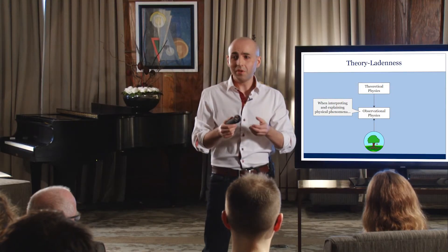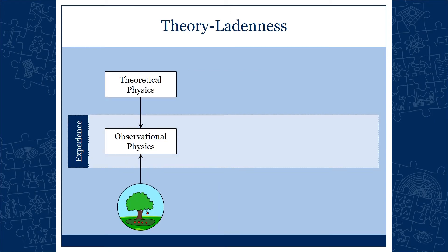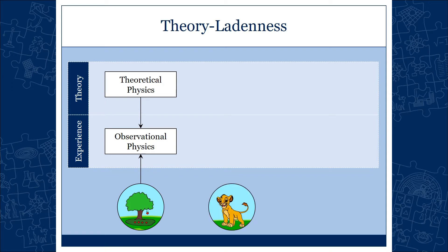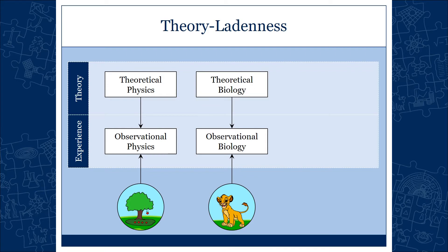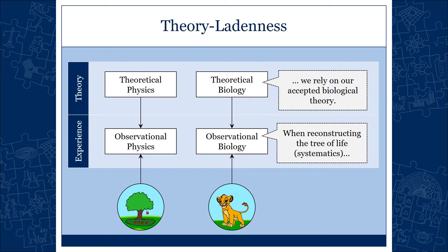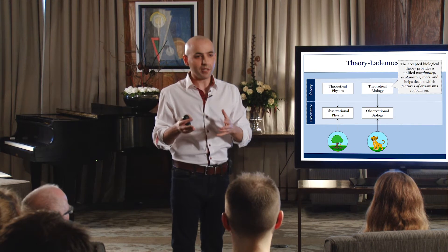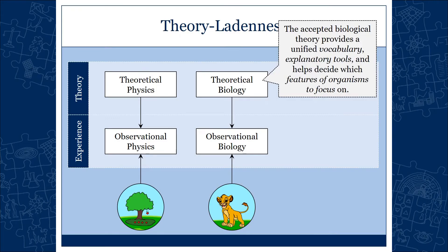So if your task is to study falling apples, you'll focus on mass and ignore the color or the brand of the apple. This is true for every combination of observational and theoretical science. For biological phenomena, it's exactly the same — when we reconstruct the tree of life, we rely on accepted biological theory, which gives us our universal vocabulary, taxonomy, explanatory tools, and helps us understand which features of organisms to focus on. At any moment of time, your current theoretical view decides what's important.